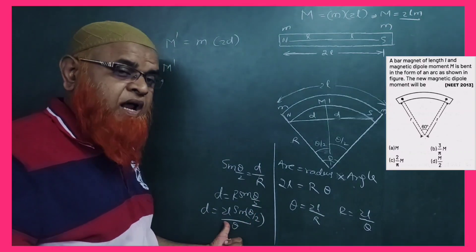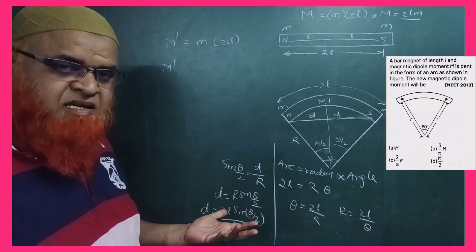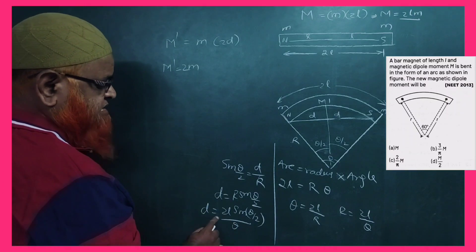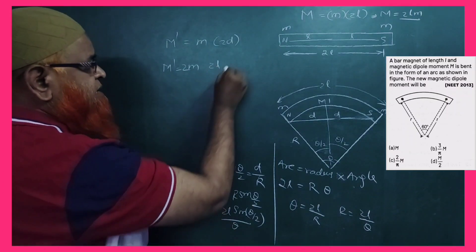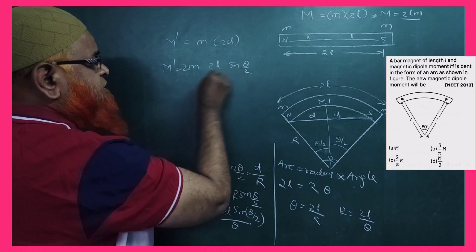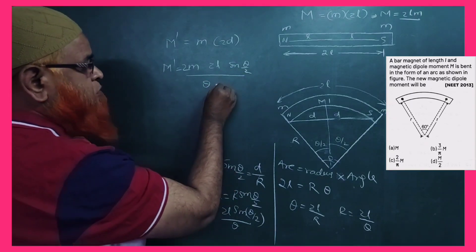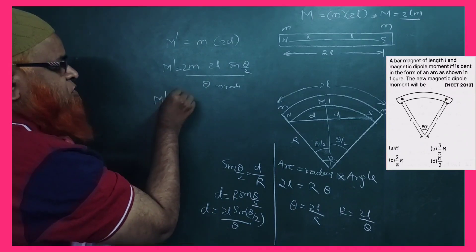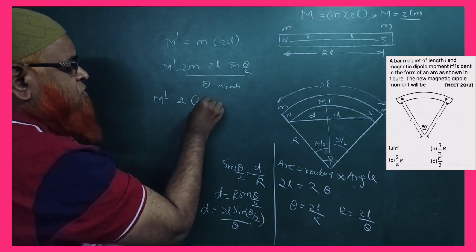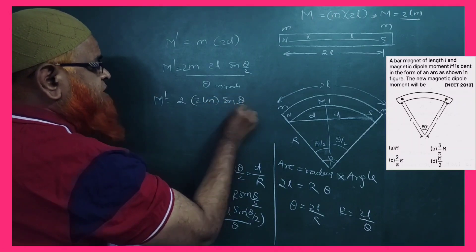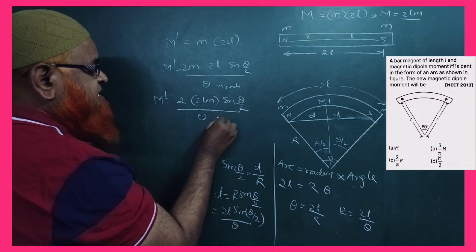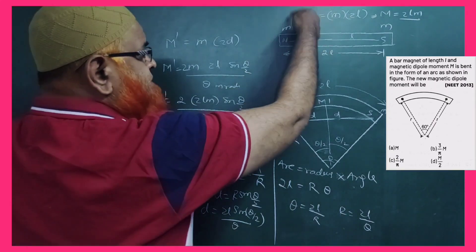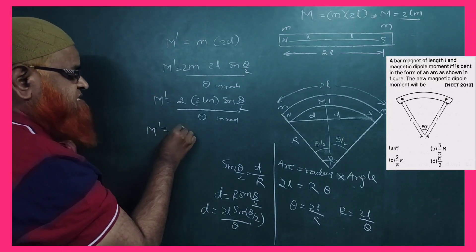Now M' = m × 2D. Substituting D: M' = 2m · (2L/θ) · sin(θ/2) = (2Lm) · 2sin(θ/2) / θ. Since 2Lm = M (the original magnetic moment), the new magnetic moment is M' = 2M · sin(θ/2) / θ. Note that θ must be in radians.